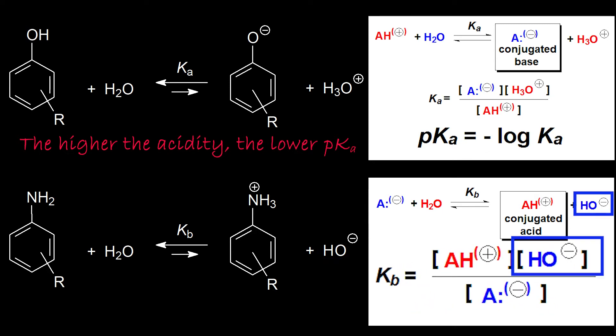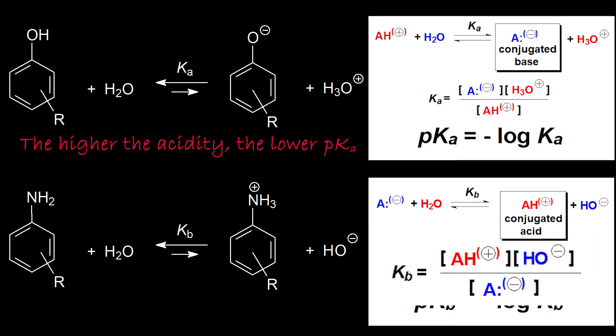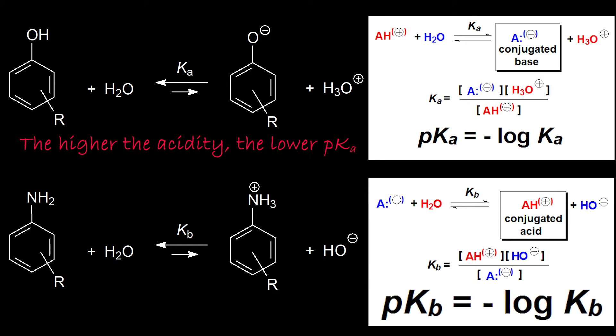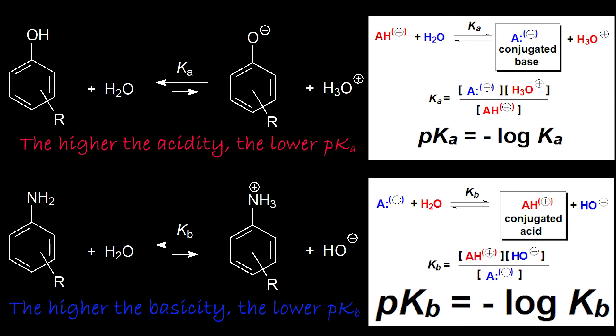The same happens to Kb. The larger it is, the higher the hydroxide production and the more basic the substance. Again, the negative sign in the pKb definition makes it lower, the higher the basicity. How come those equilibria are more or less shifted to the right-hand side, and therefore the compounds are more or less acidic or basic?